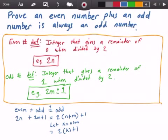Which is, of course, just 2k plus one, and that is an odd number.